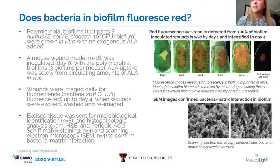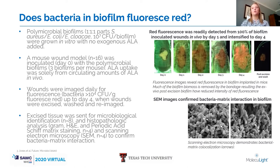We next took the same in vitro polymicrobial biofilm model with a one-to-one-to-one ratio of Staph aureus, E. coli, and Enterobacter cloacae, grown without any presence of ALA, and then transferred those into our in vivo chronic wound model. This work was done in collaboration with Kendra Rumbaugh at Texas Tech University Health Sciences Center. Biofilms without ALA start out signal negative, and then over the course of four days you can see that the bacteria are able to uptake ALA from the mammalian system, which causes the production of porphyrins and induction of fluorescence that is signal positive with the Moleculite device.